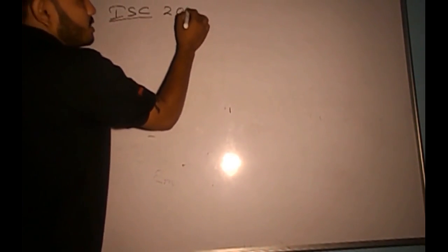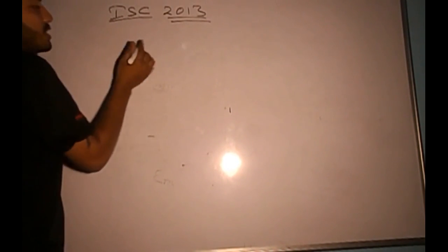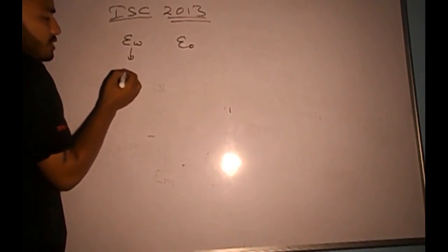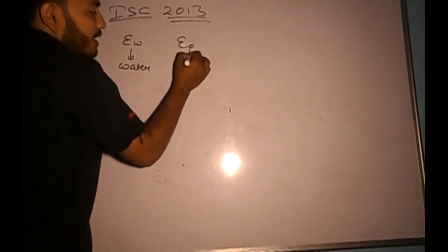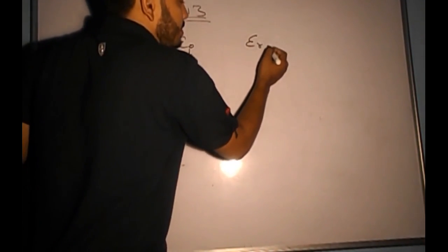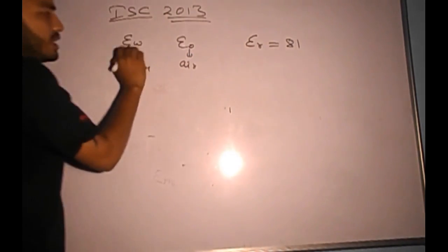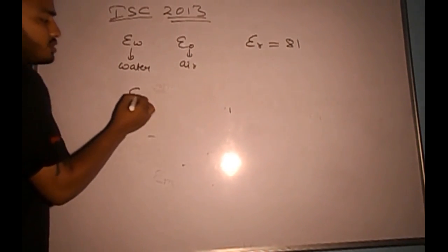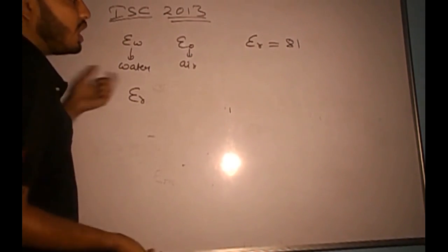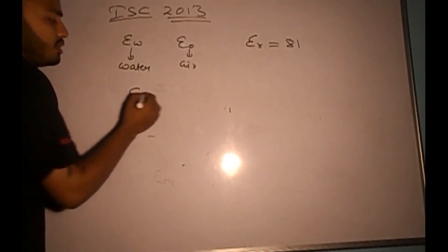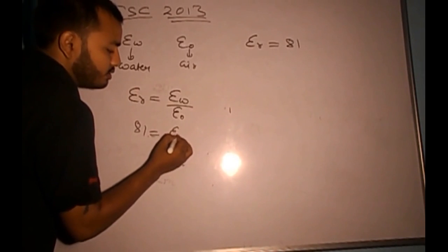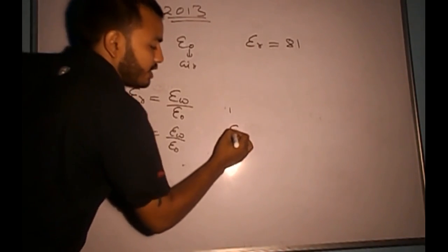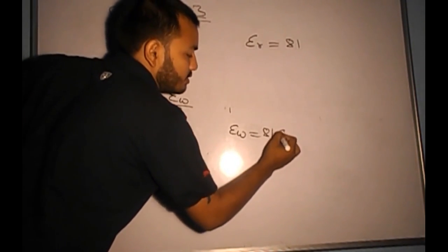Another question from ISC 2013: if ε_W and ε₀ denote the actual permittivity of water and air respectively, and the relative permittivity of water is 81, how are ε_W and ε₀ related? We write ε_R = ε_W/ε₀, so 81 = ε_W/ε₀, therefore ε_W = 81 × ε₀.